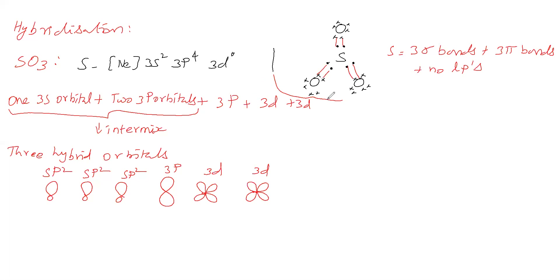In the valency shell of sulfur there are 6 electrons, and since sulfur forms 6 bonds, all six electrons go for bonding. Distributing equally: one unpaired electron in each sp² hybrid orbital, one unpaired electron in the pure 3p orbital for pi bonding, and one in each 3d orbital for pi bonding.